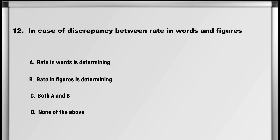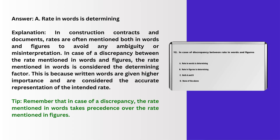Next up is question number 12: In case of discrepancy between rate in words and figures, A. Rate in words is determining, B. Rate in figures is determining, C. Both A and B, D. None of the above. Answer: A. Rate in words is determining.